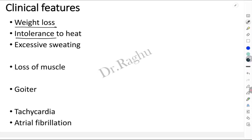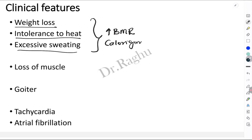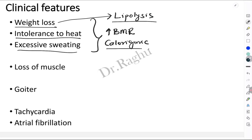Now let's look at the clinical features. Weight loss, intolerance to heat, and excessive sweating all occur because of an increase in the basal metabolic rate (BMR), which results from excessive secretion of T3 and T4 — this is also called the calorigenic action of the thyroid hormones. Weight loss can also be attributed to the action of T3 and T4 on fat metabolism, causing lipolysis. The patient is intolerant to heat because of excessive heat production from increased BMR, which also causes excessive sweating.